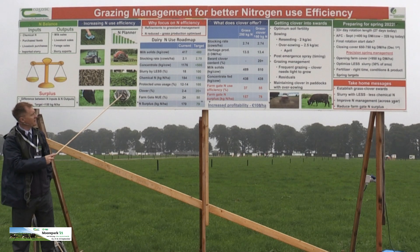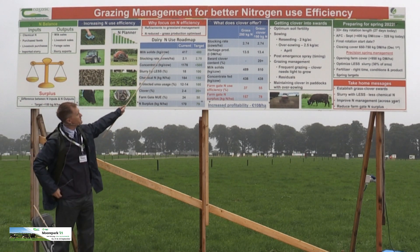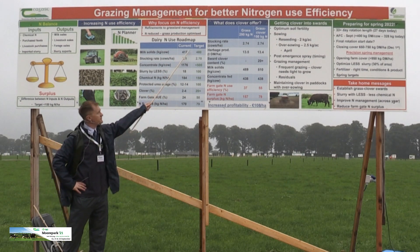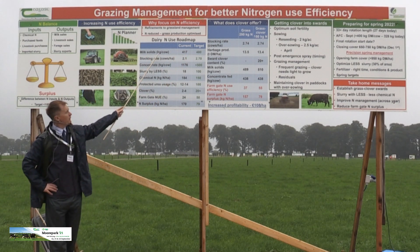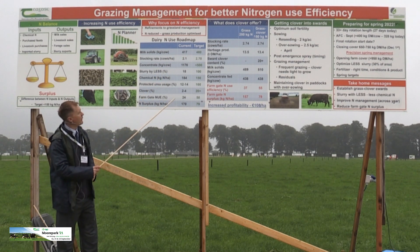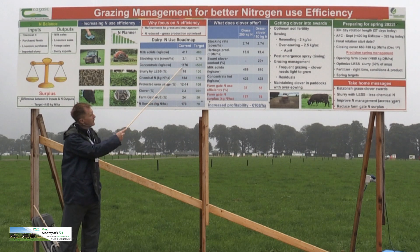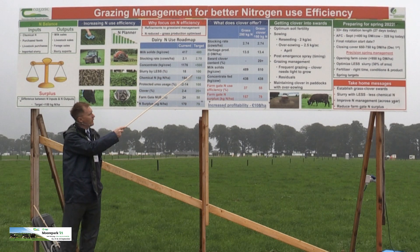Clover is a species we need to get onto farms. Your soil fertility needs to be high for clover to grow — Mike would talk about that. You also need a cow with high nitrogen use efficiency. On the dairy NUE road map, the average farm in the country is currently producing about 420 kilos of solids, and our target is about 60 more in the system. Small improvements — slightly higher stocking rate, lower concentrate input — can achieve those gains, because we can grow grass instead.